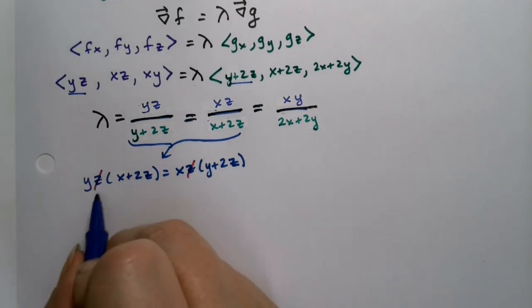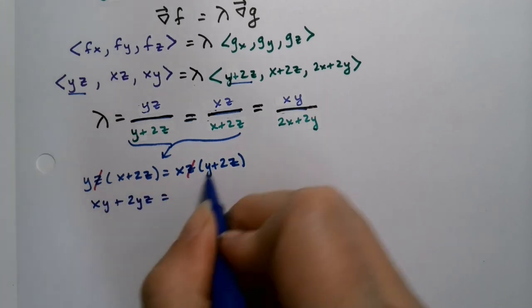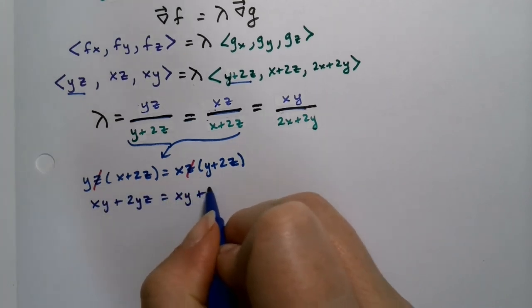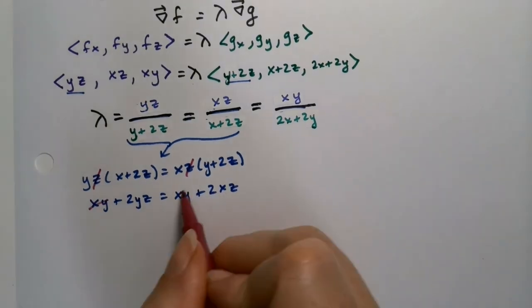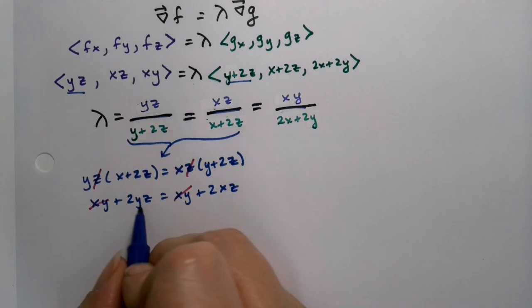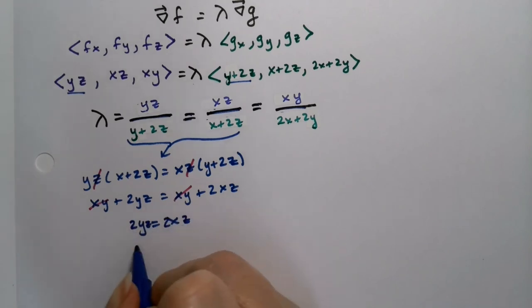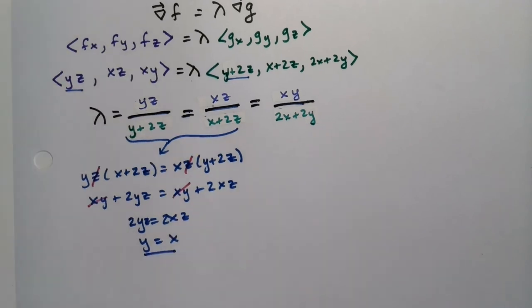Divide by z. Imagine in your head. Z's cancel. You're left with xy plus 2yz equals xy plus 2xz. So then subtract away the xy's. They're gone. And then you're left with 2yz is equal to 2xz. In other words, x equals y, or y equals x. So I know y is equal to x.